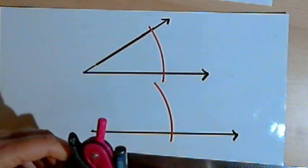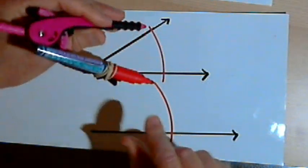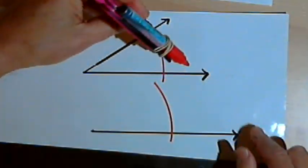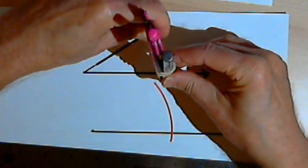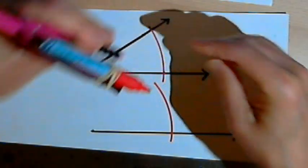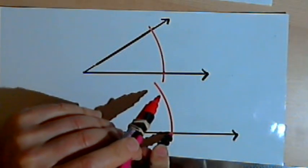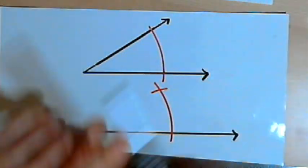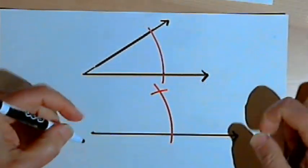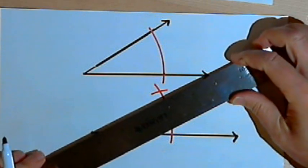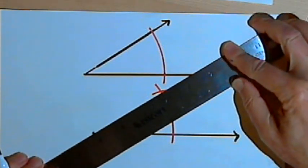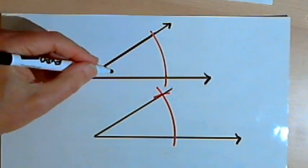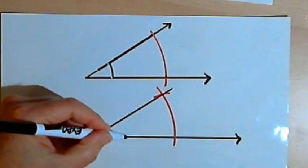Now I'm going to measure, using my compass, the distance between the place where that first arc crossed one side of the angle and the other side. So I've set the compass at that distance and now I'm going to copy that distance onto the ray that I've drawn for my second angle. Now all I have to do is connect the end point of the ray with the place where those two arcs met. And I've got my original angle and a copy of that angle.